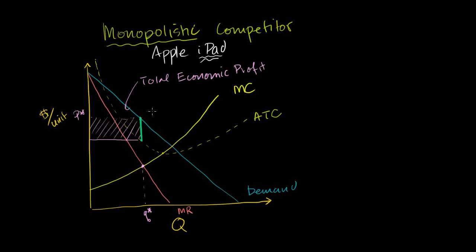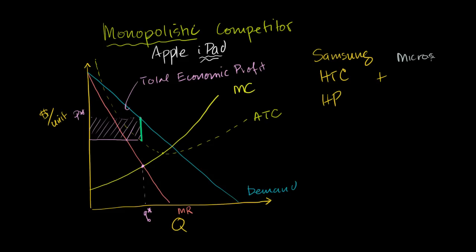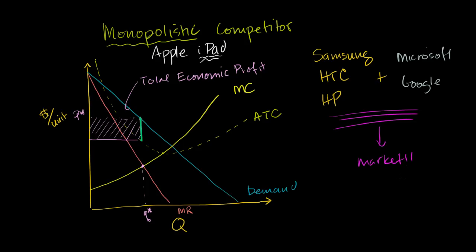Now, if the rest of the world sees economic profit, other competitors say: I can't produce iPads, but I can start making competitive products. So you'll see players like Samsung, HTC, HP — all the tablet manufacturers, all the computer manufacturers — pairing up with operating system manufacturers like Microsoft and Google's Android, and they are making competitive products. And on top of it, they are marketing it heavily. They're trying to market their products as aggressively as possible. As their products become more and more comparable to an iPad — or maybe even better in certain dimensions, either cost or features — and they market it heavily, what is going to happen to Apple's demand curve in the long run?